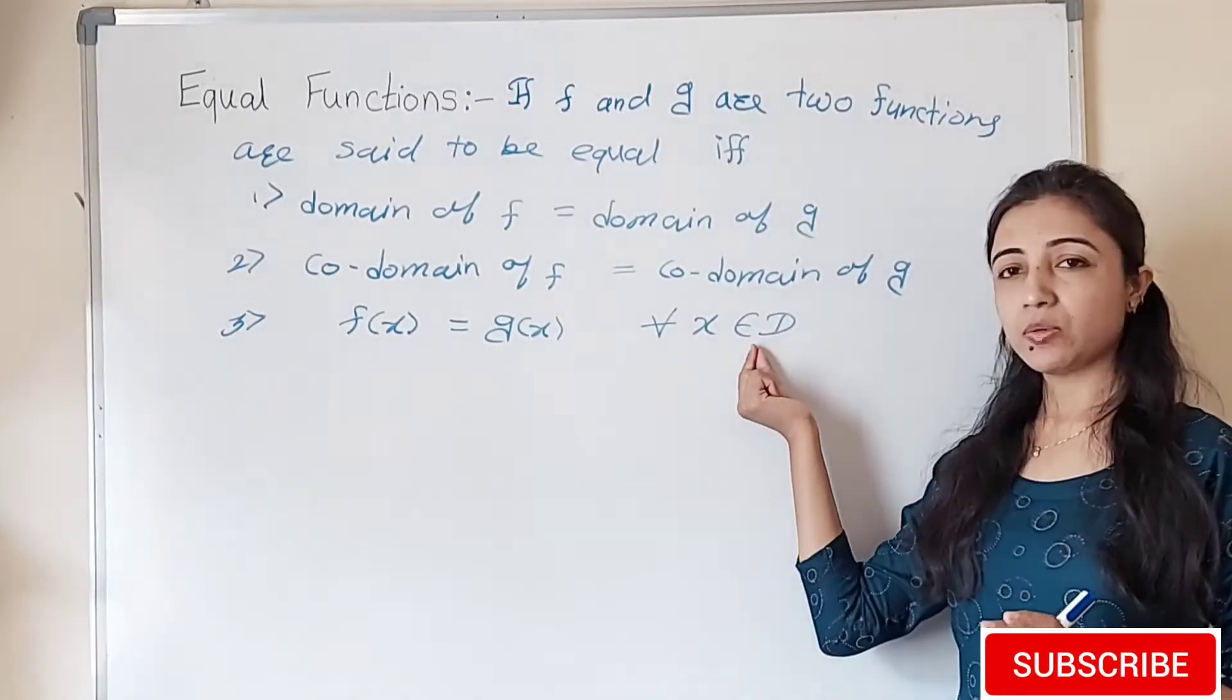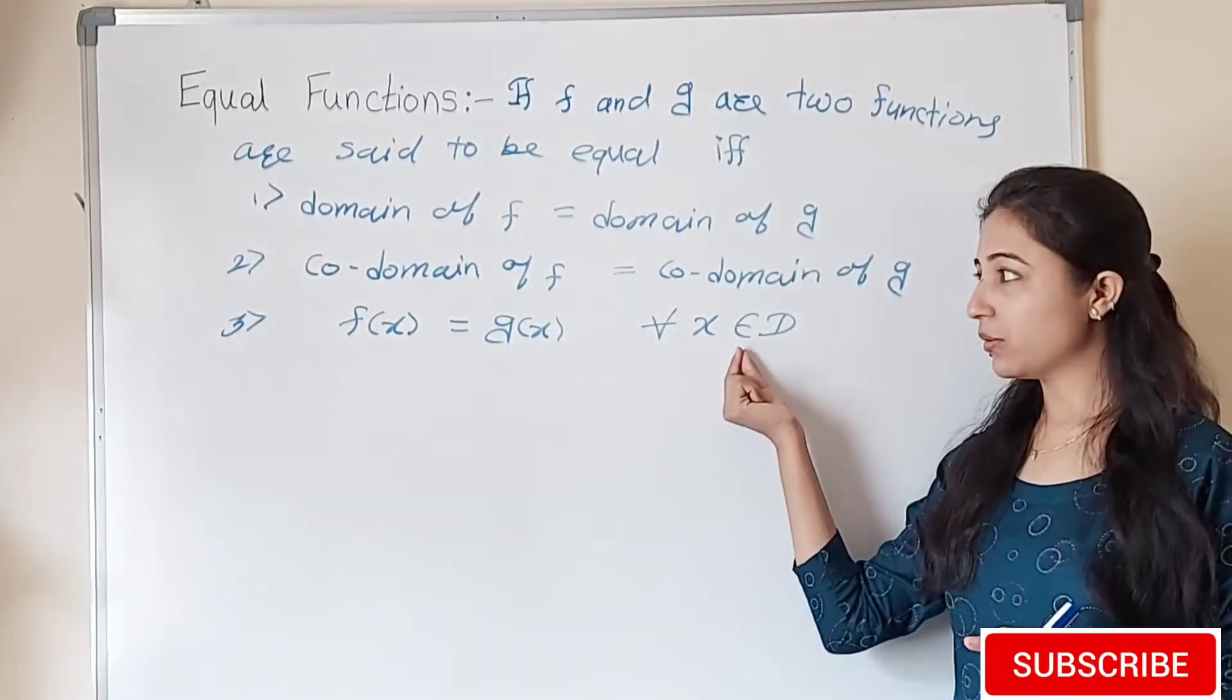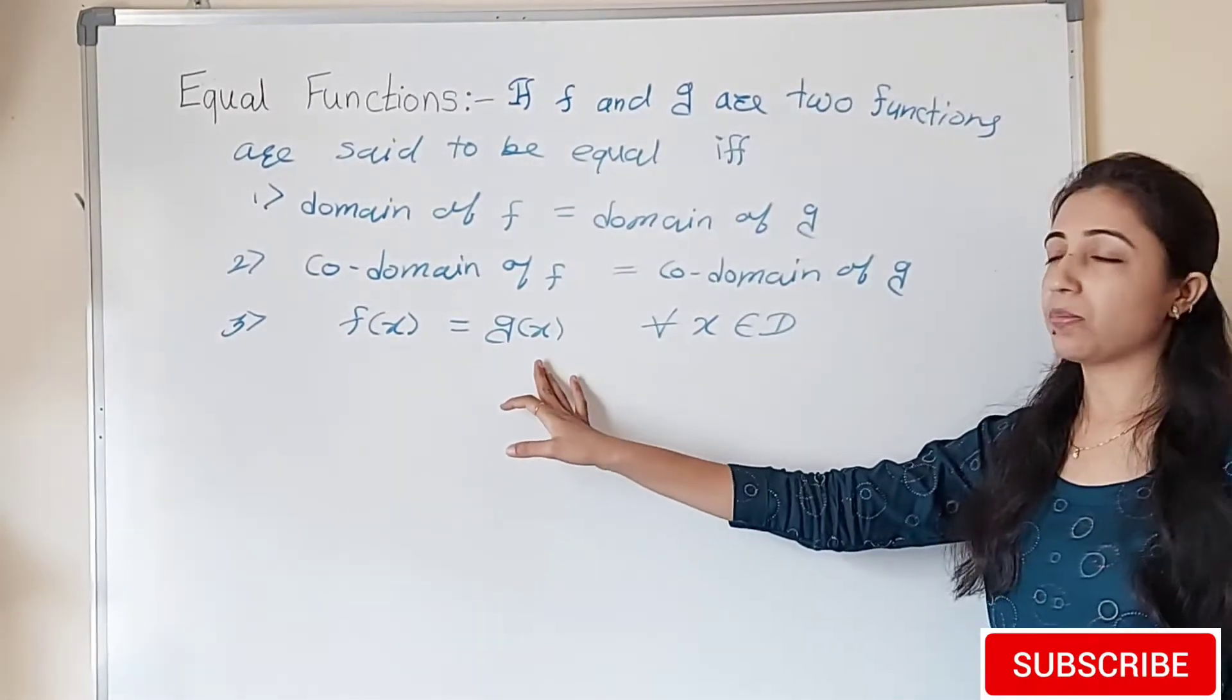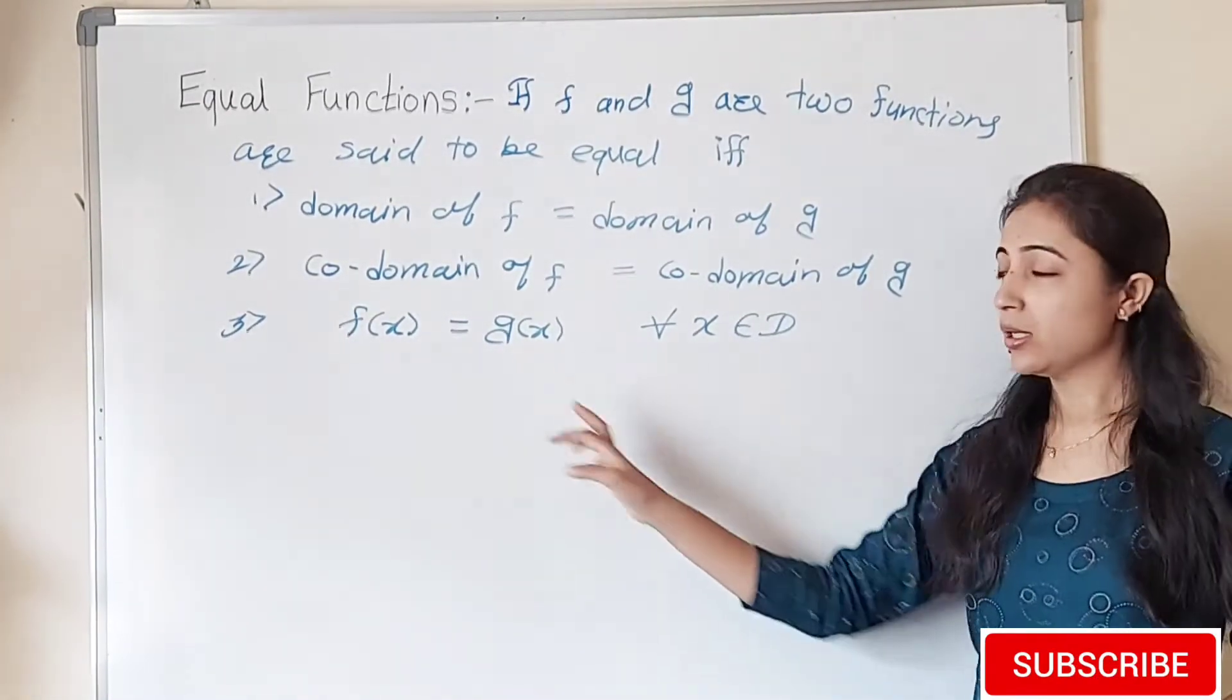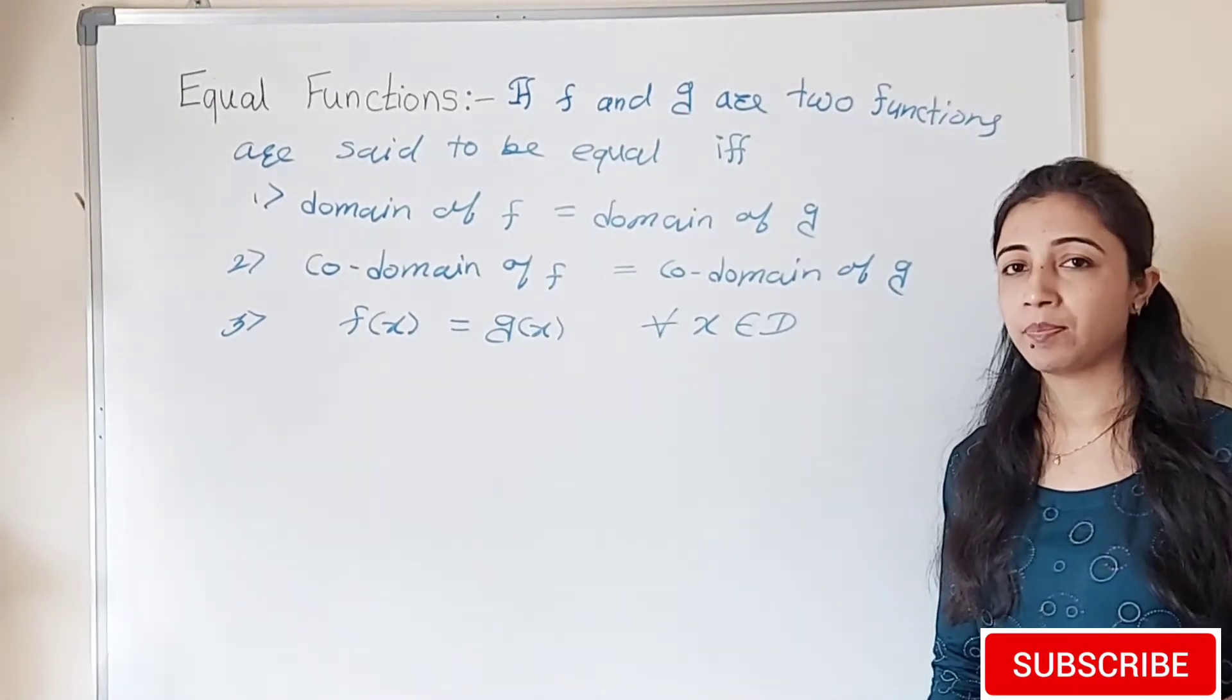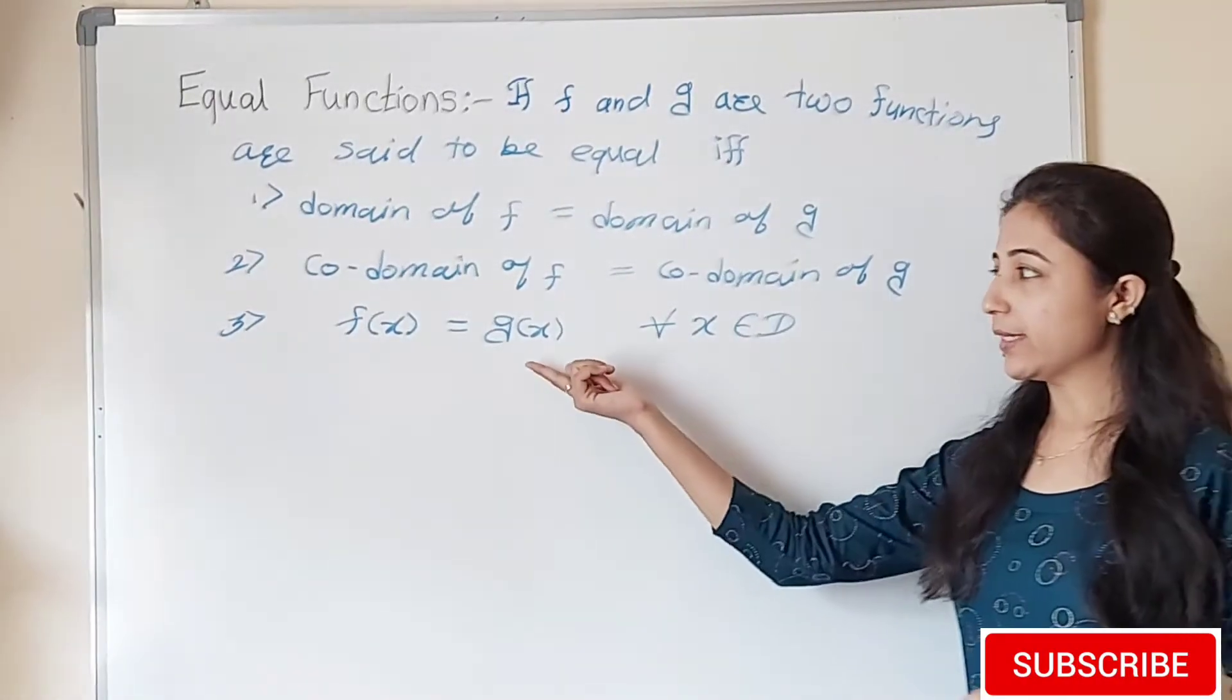f(x) equals g(x) for all x belongs to d simply means that for domain values, the corresponding image with respect to f must be the same as with respect to g. If this holds, then we can say the functions are equal. Let's see one example related to this point.